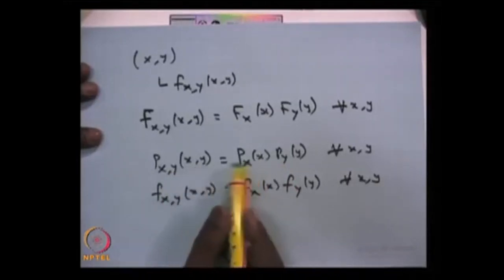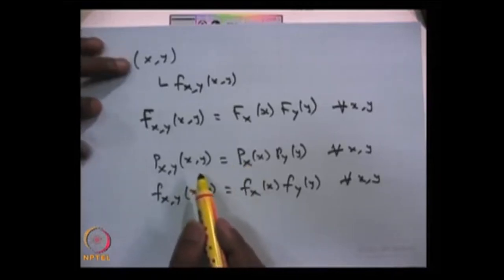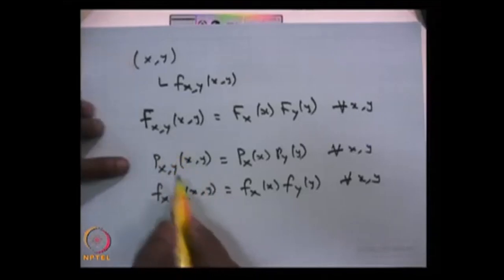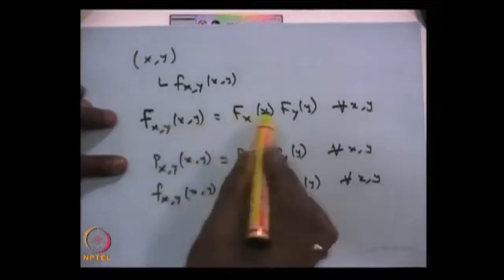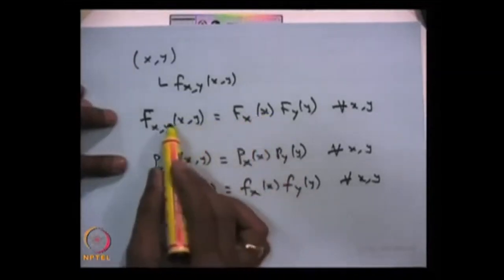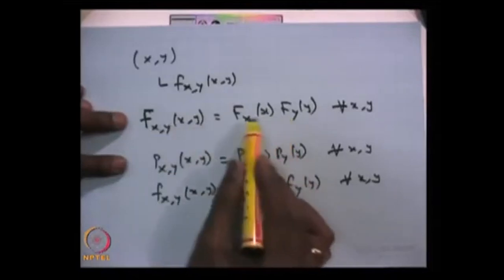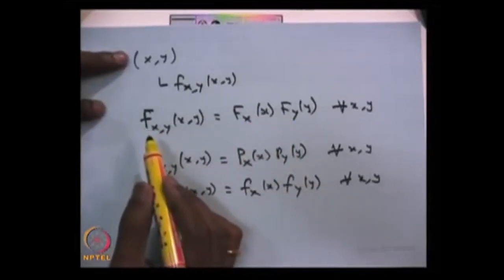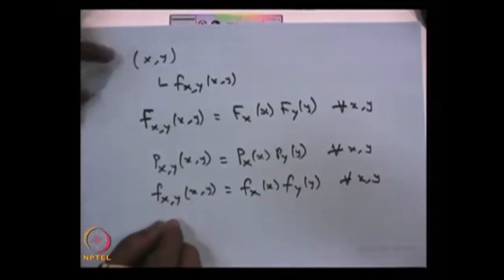If this property is satisfied, then you can conclude the random variables are independent. Similarly, if the random variables are independent, then this property is going to be satisfied. Whether it is discrete or continuous, you can always check at the CDF level. If the joint CDF and the individual CDFs satisfy this property, then you can conclude both random variables are independent.